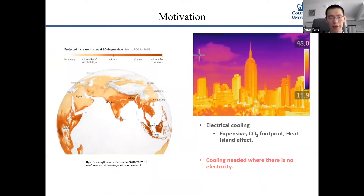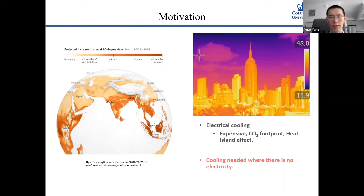The motivation for this work is to reduce global warming. When the temperature gets higher, people need more energy to cool things, such as by using electrical air conditioning. But air conditioning just uses electricity to move heat from inside a building to outside — there's no real reduction in the total amount of heat. And as electricity is also converted to heat in the end, the net effect of air conditioning is actually heating.